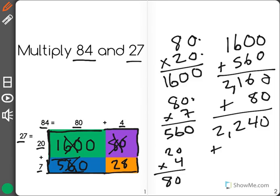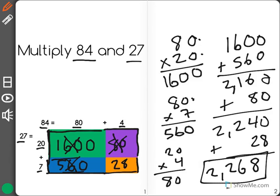I've added that in and last I have to add in the 28 which will give me 2268 which is your final product of multiplying 84 and 27.